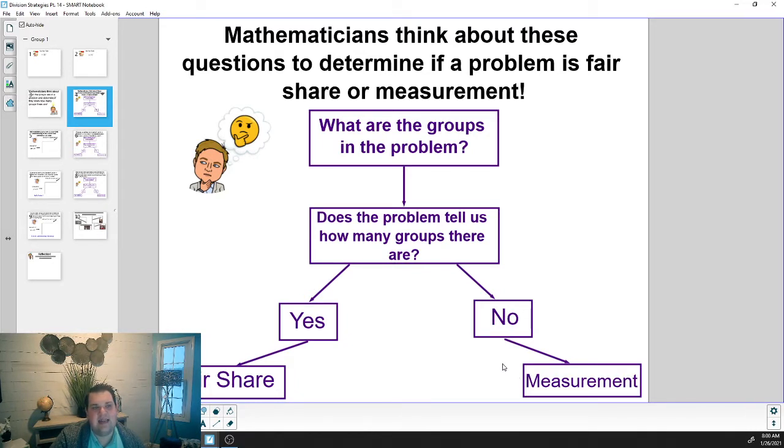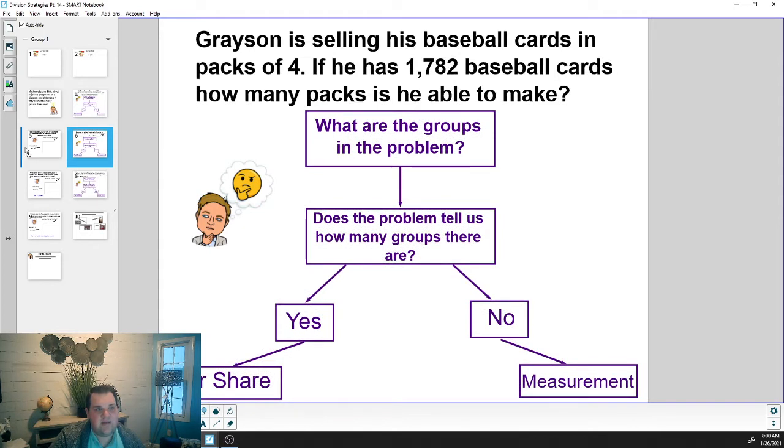We're going to practice that together again today. We'll be looking at two different problems together, and I want you to help me go through these questions and help me solve them. The first one says Grayson is selling his baseball cards in packs of four. If he has 1,782 baseball cards, how many packs is he able to make?